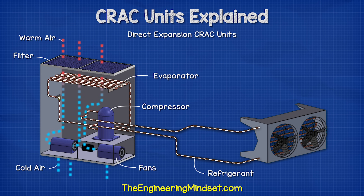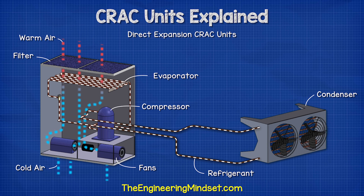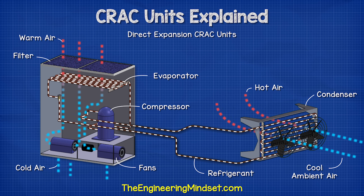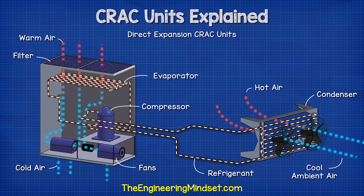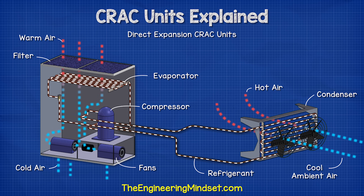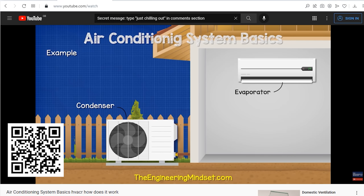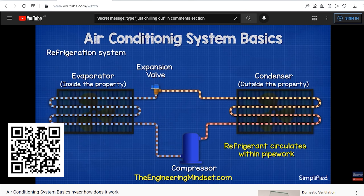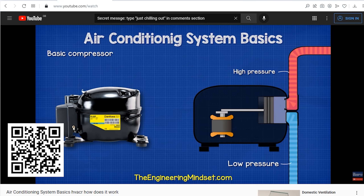The refrigerant then flows to the condenser unit located outside, where a fan blows air over the pipes to remove the heat from the system, and the refrigerant returns to collect more thermal energy. We have covered the basics of refrigeration systems in detail previously — there's a link in the video description below to learn more.